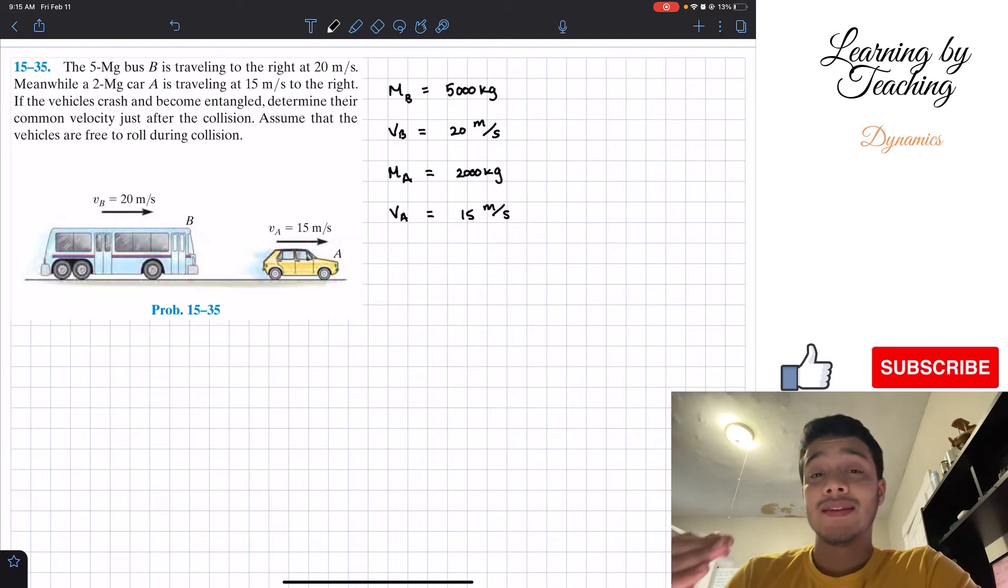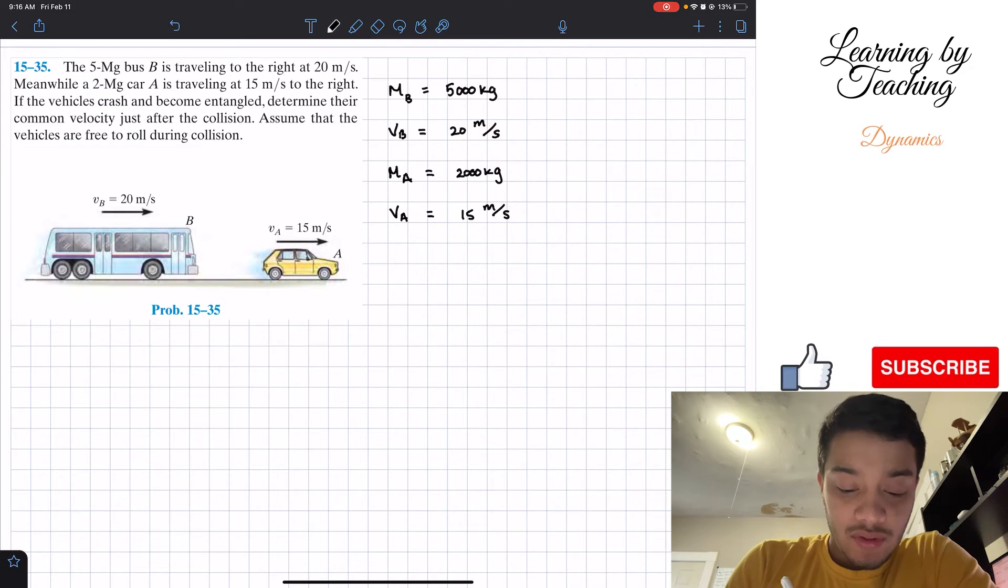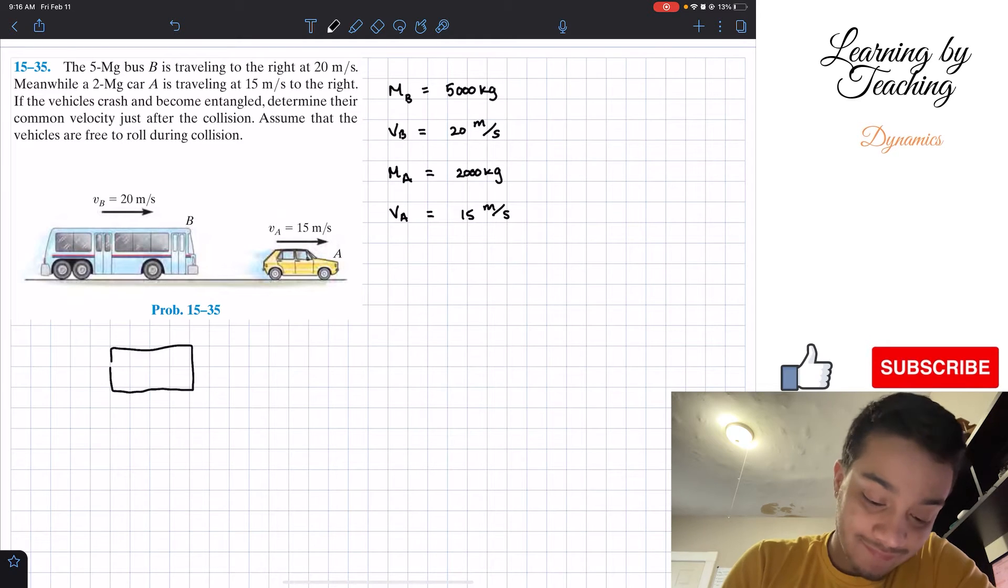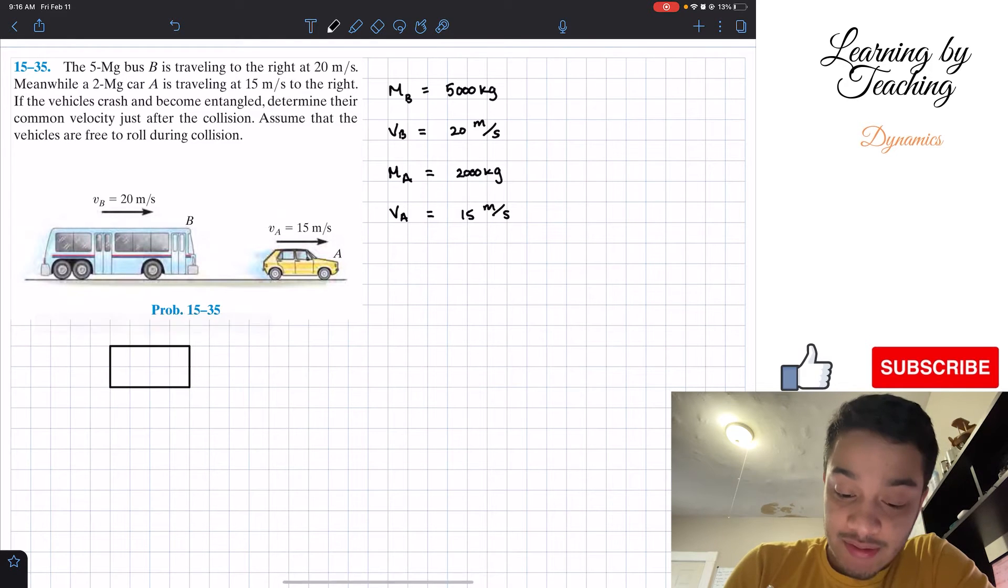After that, they're telling me that these two vehicles are crashing and then entangled together. What they mean by this is that they're going to get stuck together. If we were to draw it in a very bad way, the bus will look something like this and the little car looks something like this, and they get entangled together.